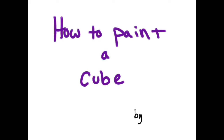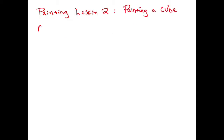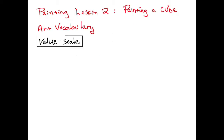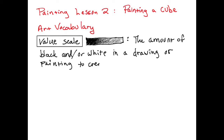How to paint a cube by Jason. This is painting lesson two — painting a cube. The art vocabulary we're going to use to discuss how to make a cube look three-dimensional using paint. The key term here is value.